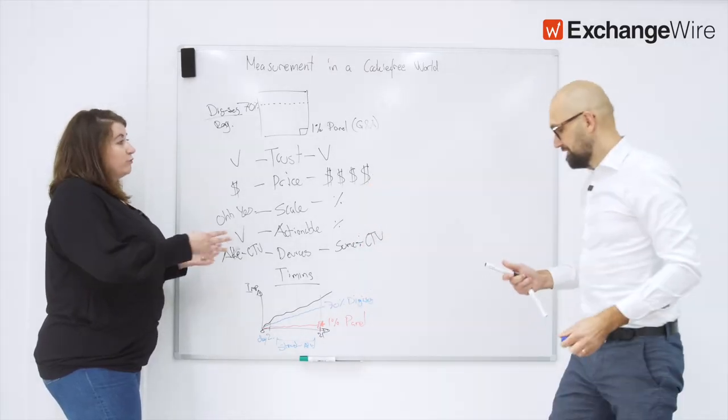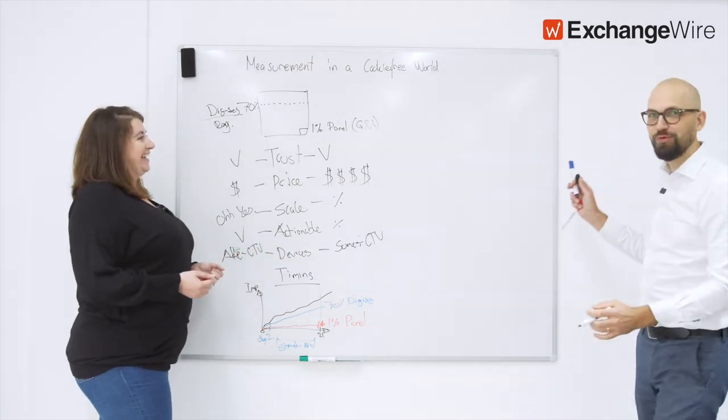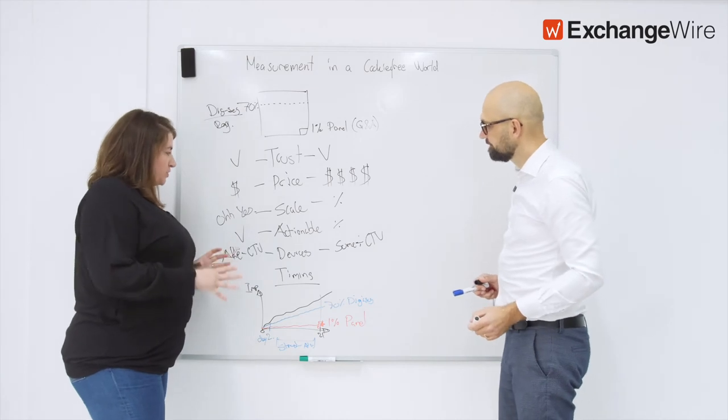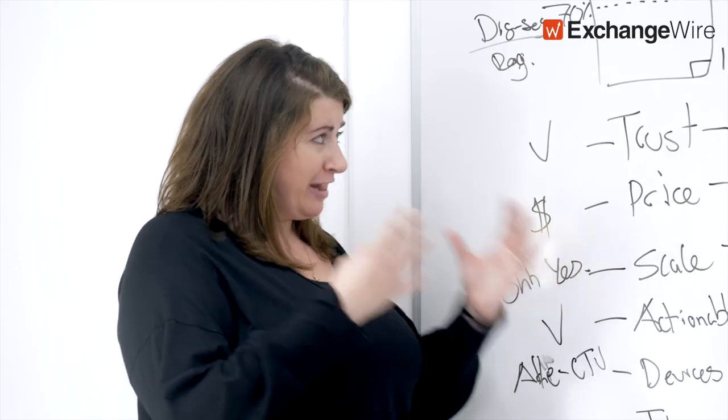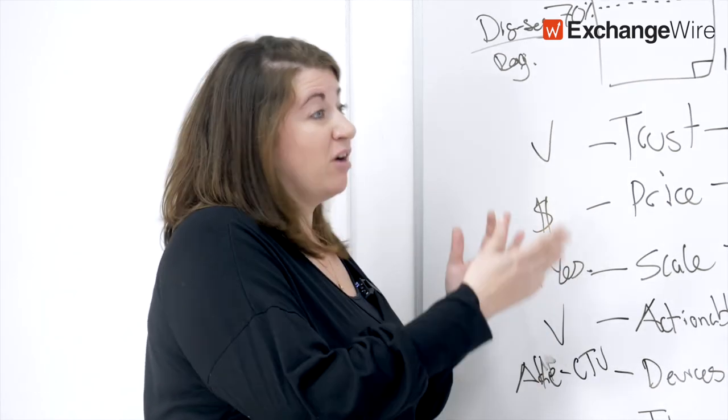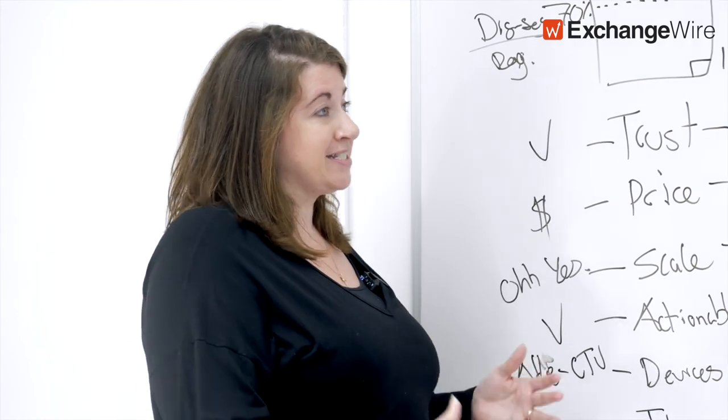And the difference here basically is a strategic advantage. I guess there's one question around this, which is obviously you mentioned that panel-based data is one-to-one data. DigiSeg data is probabilistic data, obviously. And in a cookie-free world, it needs to be outside of first party data. It has to be probabilistic. What about questions around precision?